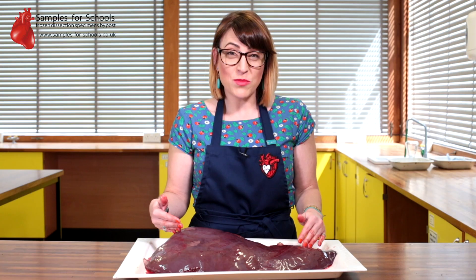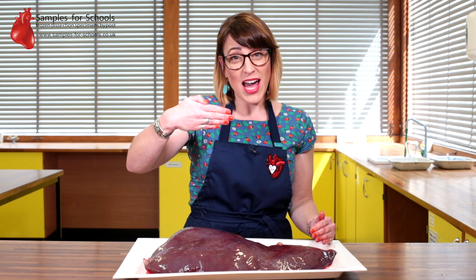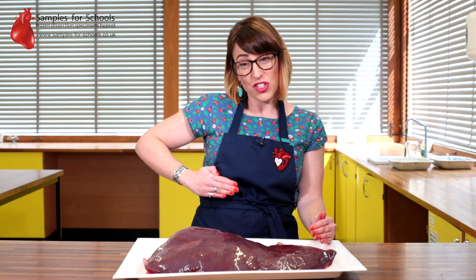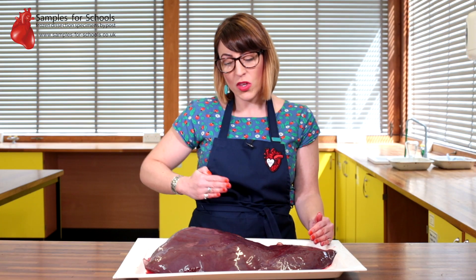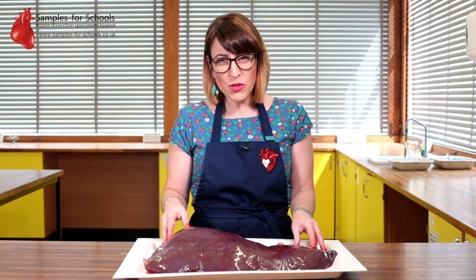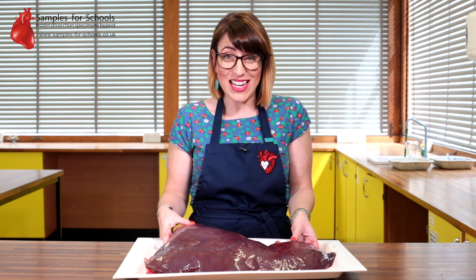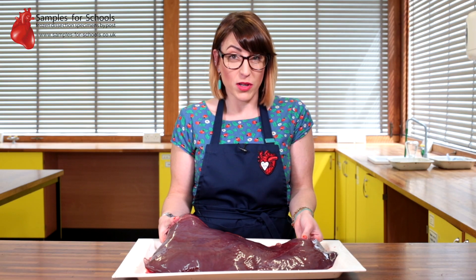Now in terms of where your liver is in a human, if you take your right hand and place it under your ribcage, it's approximately just there. And in a human male, this can weigh up to 1.8 kilograms and contain up to a pint of blood.